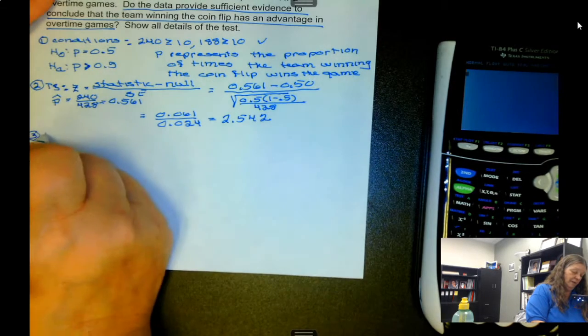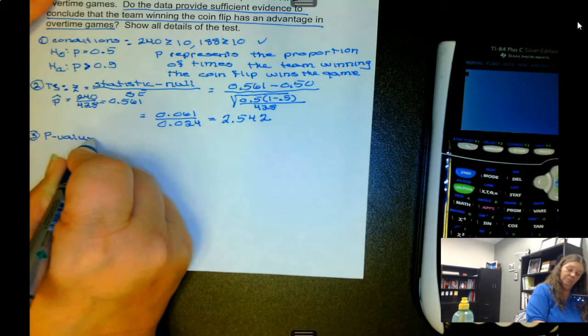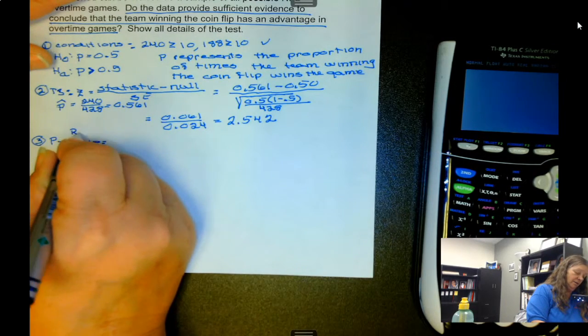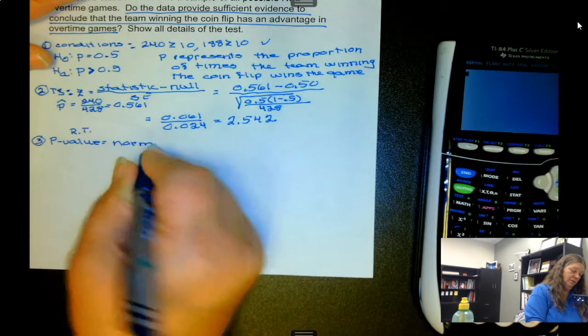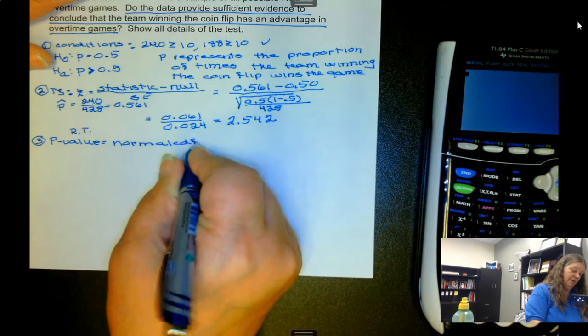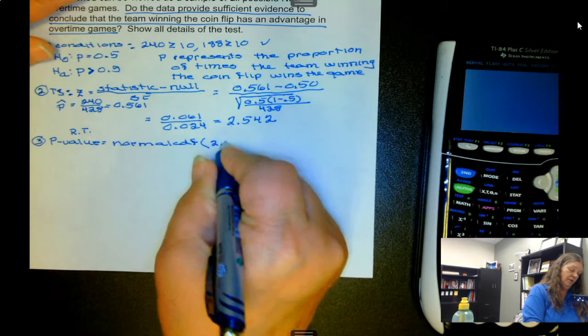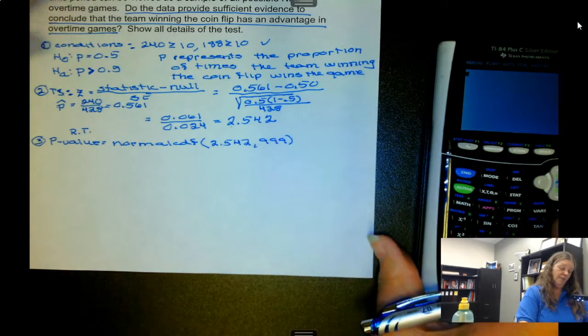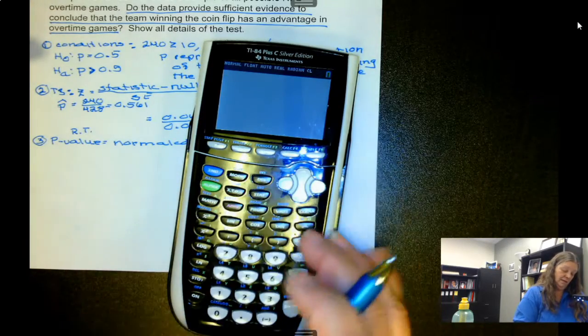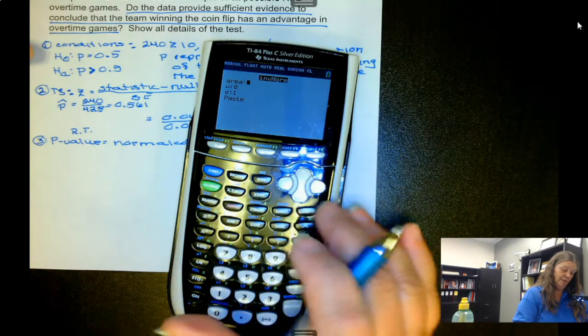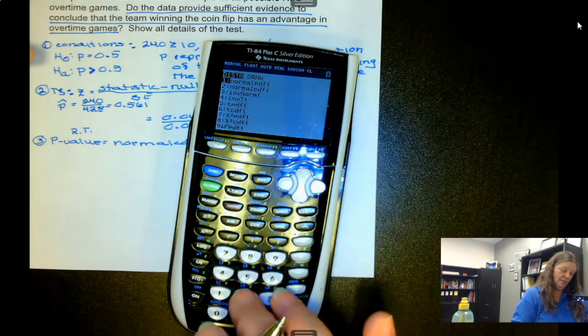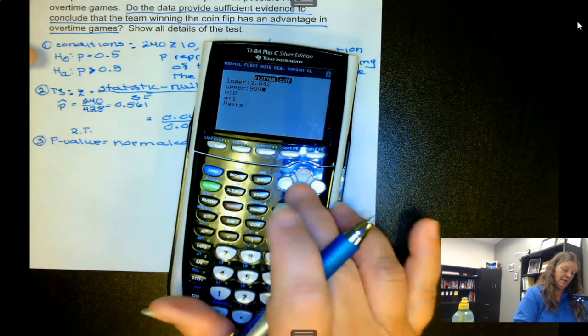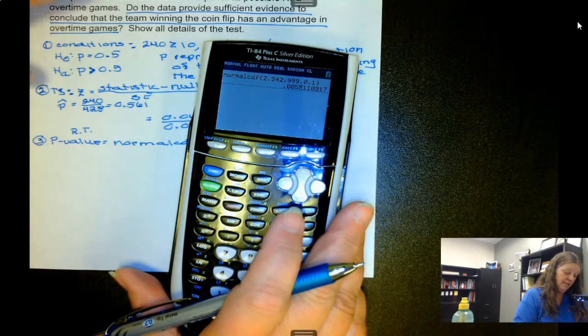So now we find the p-value. We look, the alternative hypothesis has a greater than, so it's a right tail. So that means we have normalCDF. And as a right tail, 2.542 is our lower limit and 999 is our upper limit. And we get 0.0055.